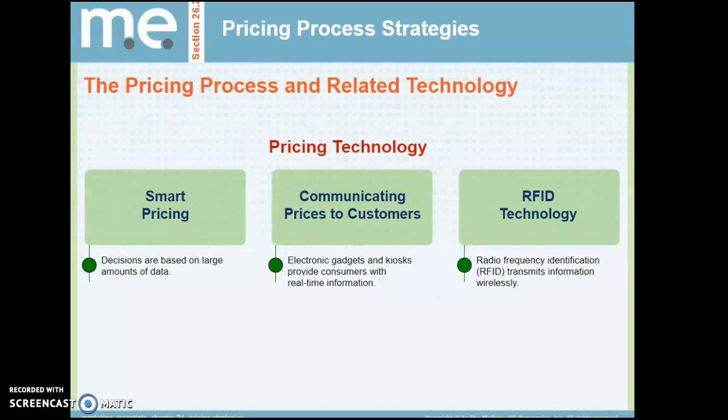Looking at pricing technology: smart pricing decisions are based on a large amount of data and research collected in large quantities. Electronic gadgets and kiosks provide consumers with real-time information — for example, you can log into Walmart and see the current price of an Apple iPhone through Straight Talk. RFID, or radio frequency identification, transmits information wirelessly, reflecting how improved technology makes it easier to convey prices to customers.